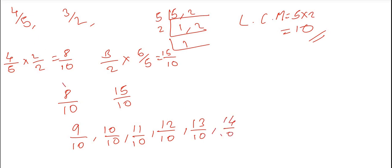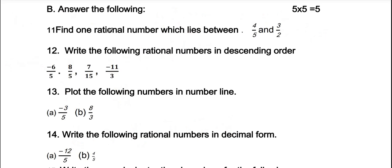So any of these — 9/10, 10/10, 11/10, 12/10, 13/10, or 14/10 — is the answer. That's one rational number lying between 4/5 and 3/2. Next, question 12: write the following rational numbers in descending order.